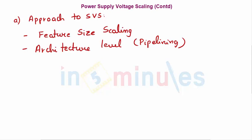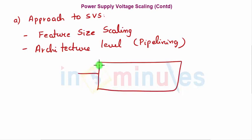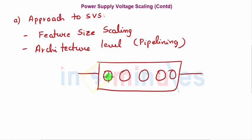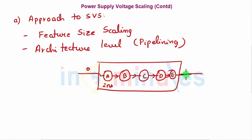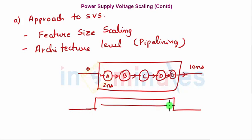The other approach is at the architectural level through the concept of pipelining. Suppose there is a block with five people who need to do some tasks, each taking two nanoseconds, and each person is dependent on the previous one to start. If A, B, C, D, E all take two nanoseconds, then starting at time zero the output of E will be ready at 10 nanoseconds.